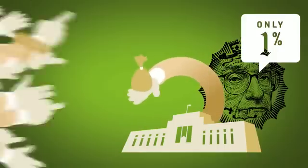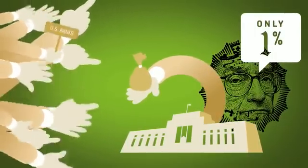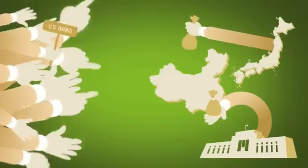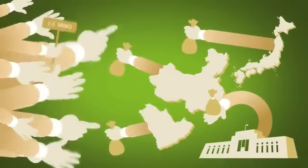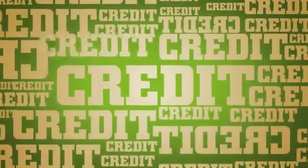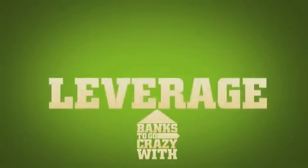On the flip side, this means banks on Wall Street can borrow from the Fed for only 1%. Add to that general surpluses from Japan, China, and the Middle East, and there's an abundance of cheap credit. This makes borrowing money easy for banks and causes them to go crazy with leverage.